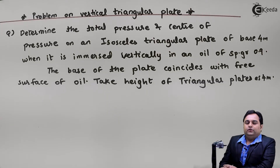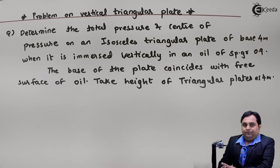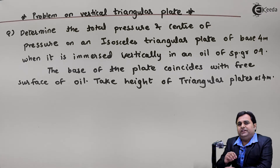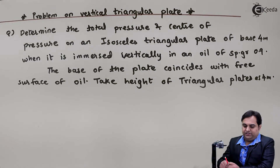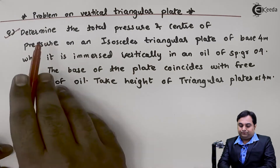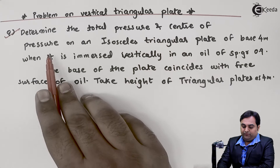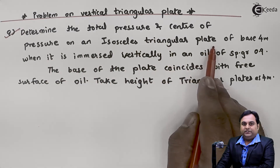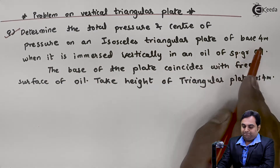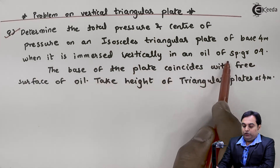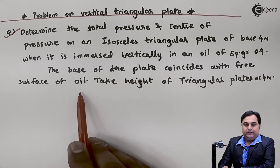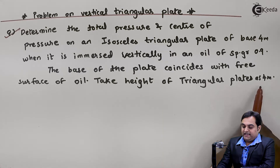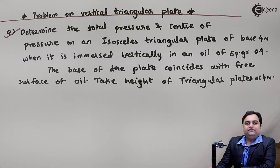Hello friends, in this video we will see a problem in which there is a vertical triangular plate immersed in oil. The question is: determine the total pressure and center of pressure on an isosceles triangular plate of base 4 meters when it is immersed vertically in an oil of specific gravity 0.9. The base of the plate coincides with the free surface of oil, and the height of the triangular plate is 4 meters.